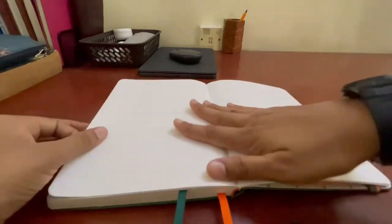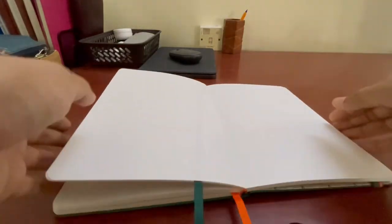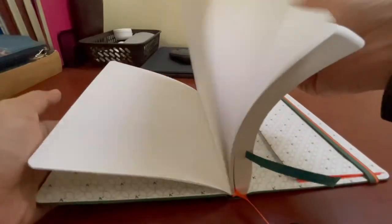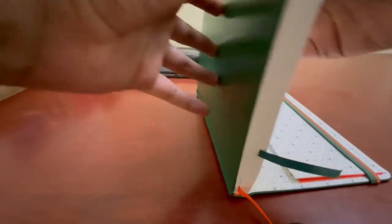The pages are nice and smooth. This is actually the bleached white. I think this is the white shade. It's not the natural shade of paper. Let's come to the dot markings now.